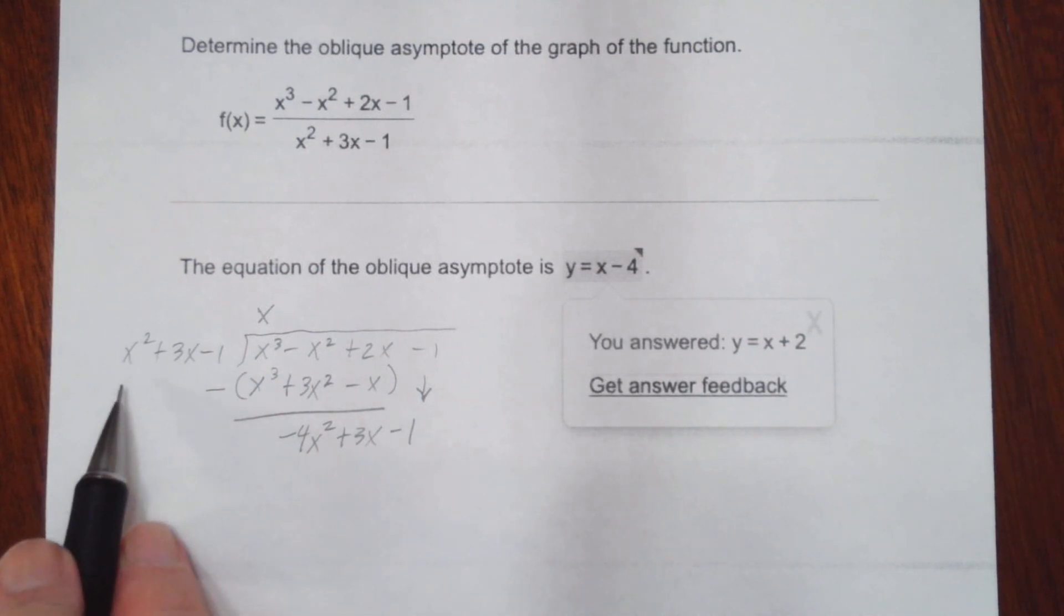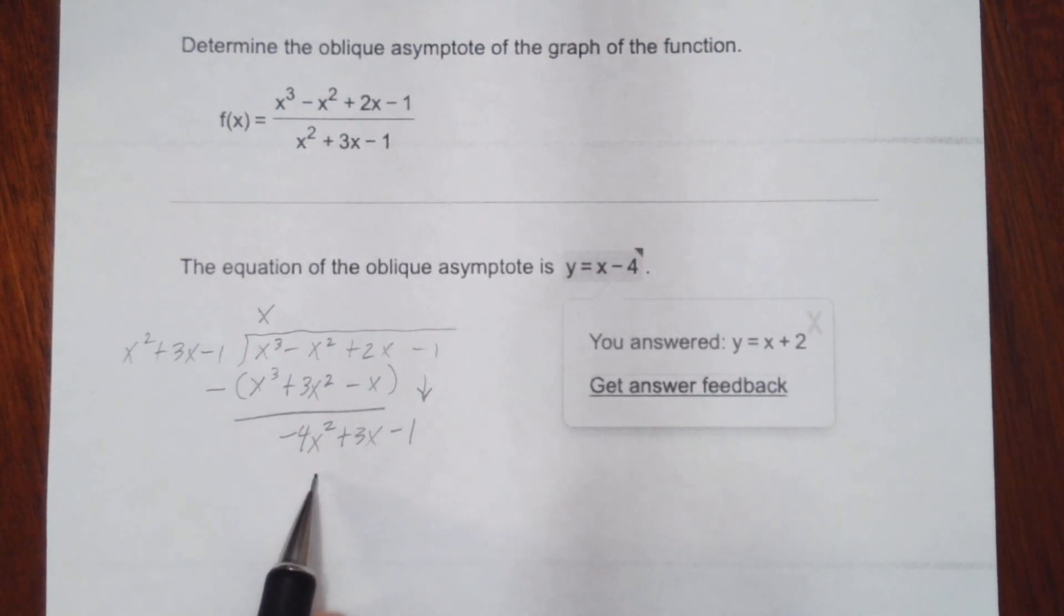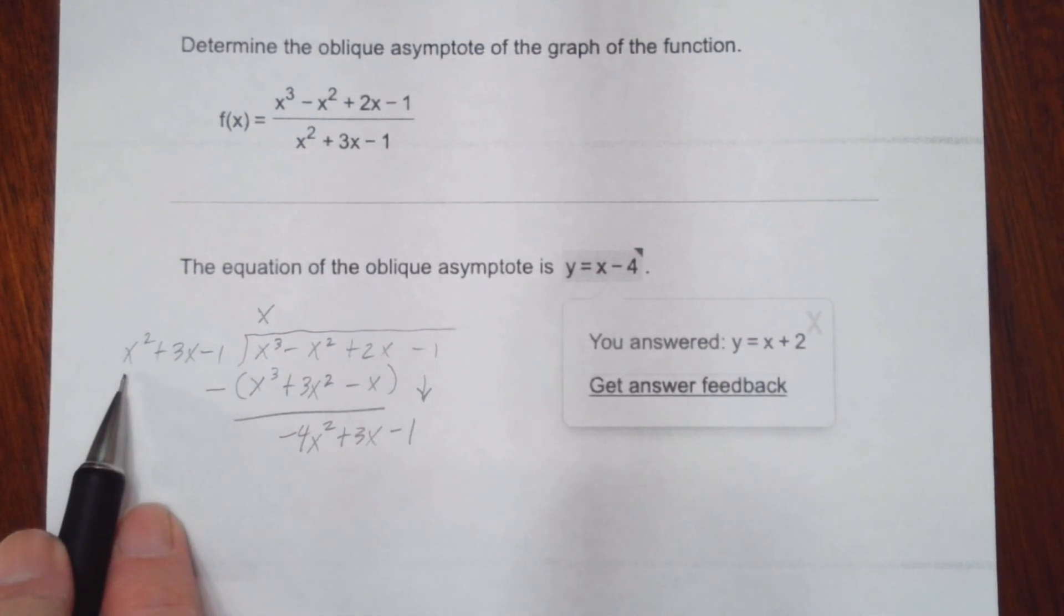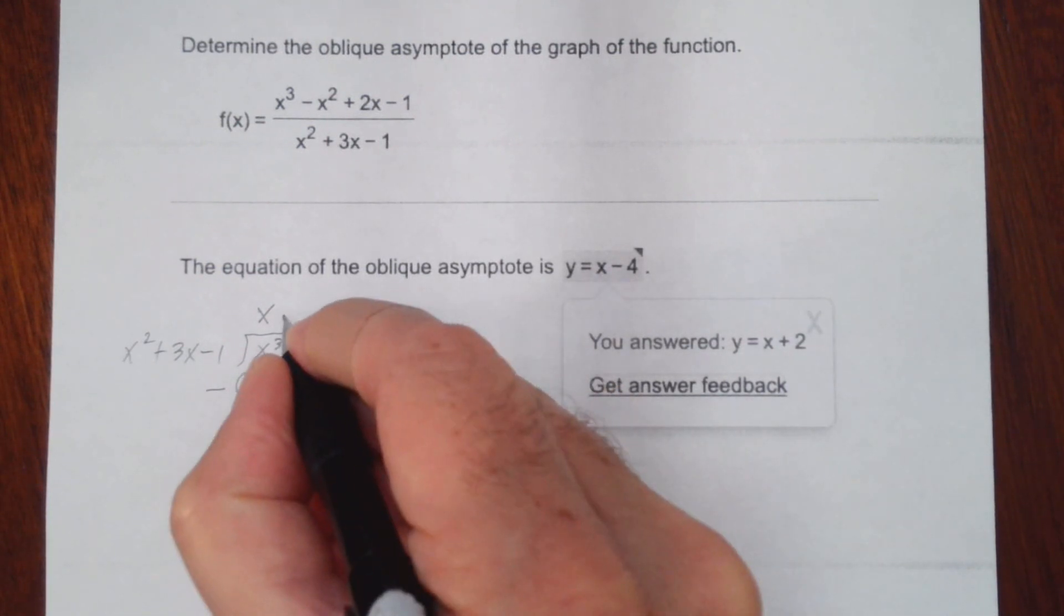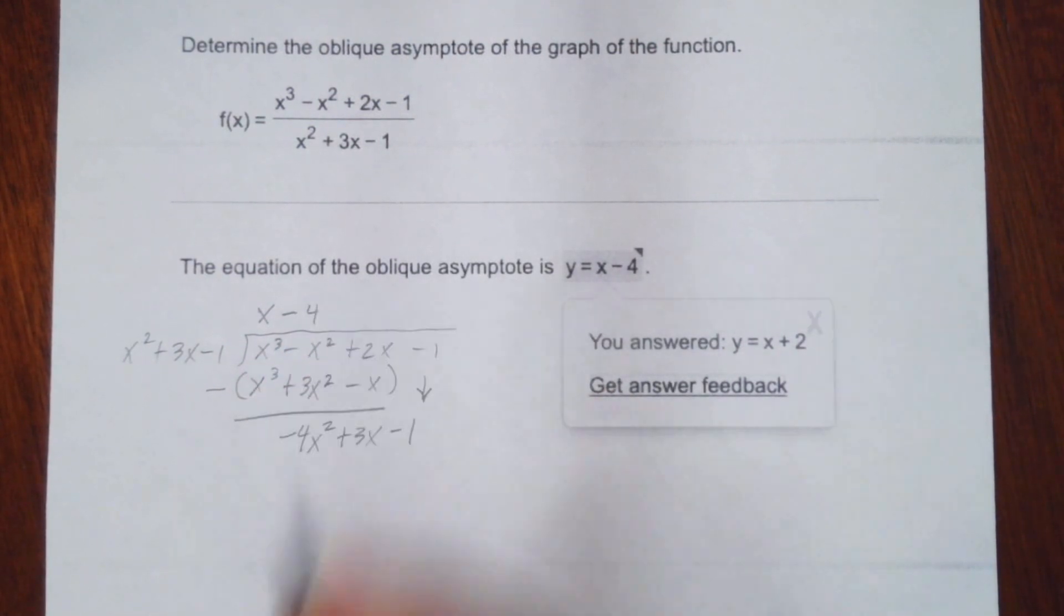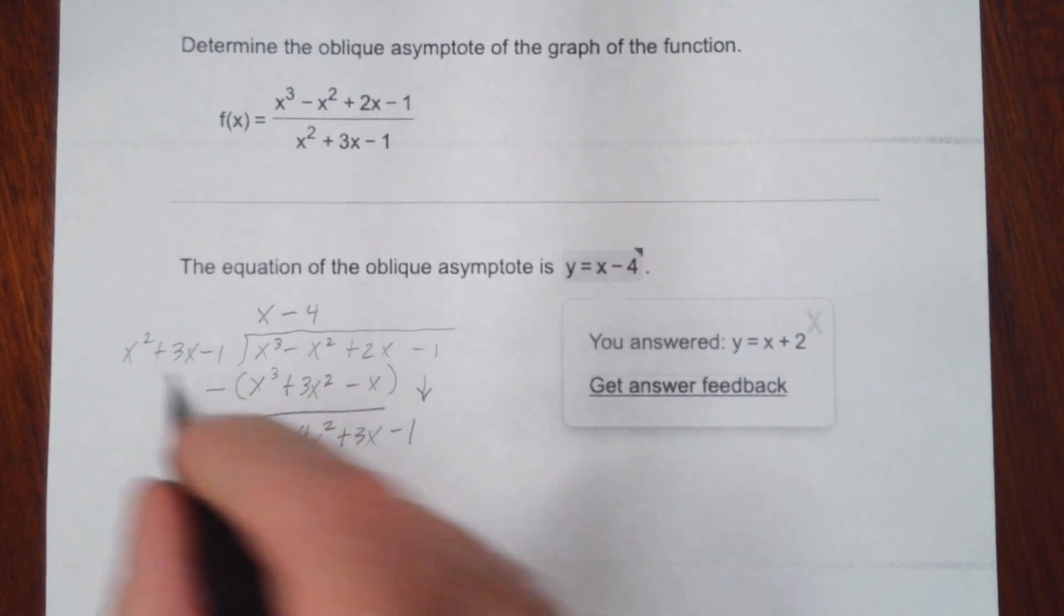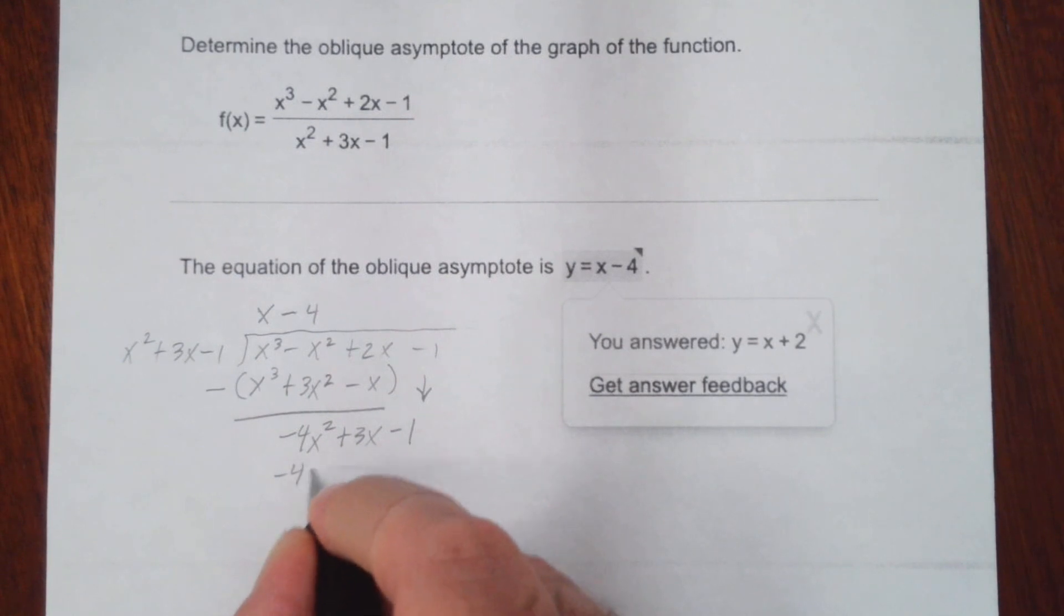And then next, I need to look at the leading terms again and ask myself, what times x squared is going to give me negative 4x squared? Of course that would be negative 4. We'll write minus 4. And we'll multiply here. We get negative 4 times x squared is negative 4x squared.